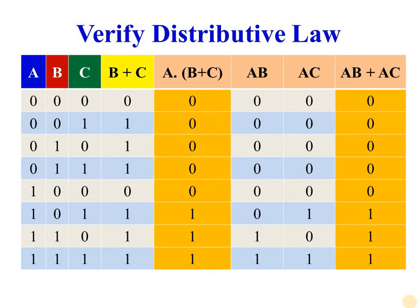Using this truth table, we can verify distributive law. In this truth table, there are three variables A, B, and C, with input combinations from 0 0 0 to 1 1 1. We have computed the values of A AND (B OR C) and (A AND B) OR (A AND C). By comparing the fourth and seventh columns, we can find that A AND (B OR C) is equal to (A AND B) OR (A AND C).